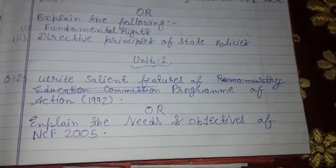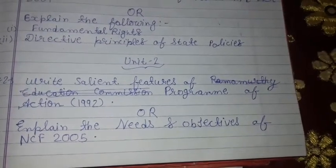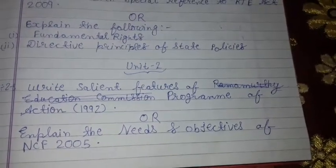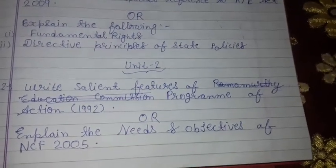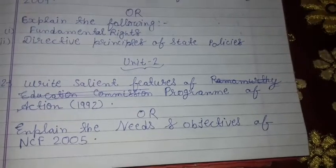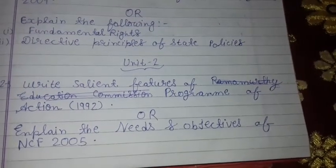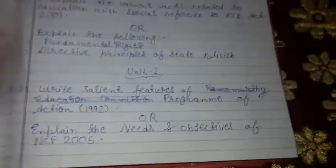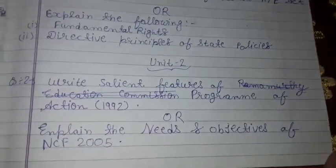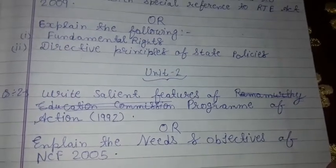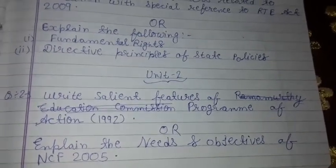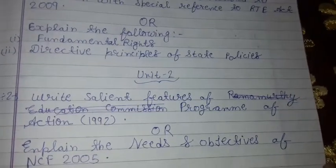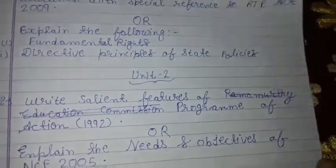In Unit 2, we have: Explain the Salient Features of NCF Programme of Action 1992. And in the choice we have: Explain the needs and objectives of NCF 2005. NCF is the National Curriculum Framework 2005. It is important for the 2018 paper and has also been asked in the re-appear paper of 2017, so that's why it is important.